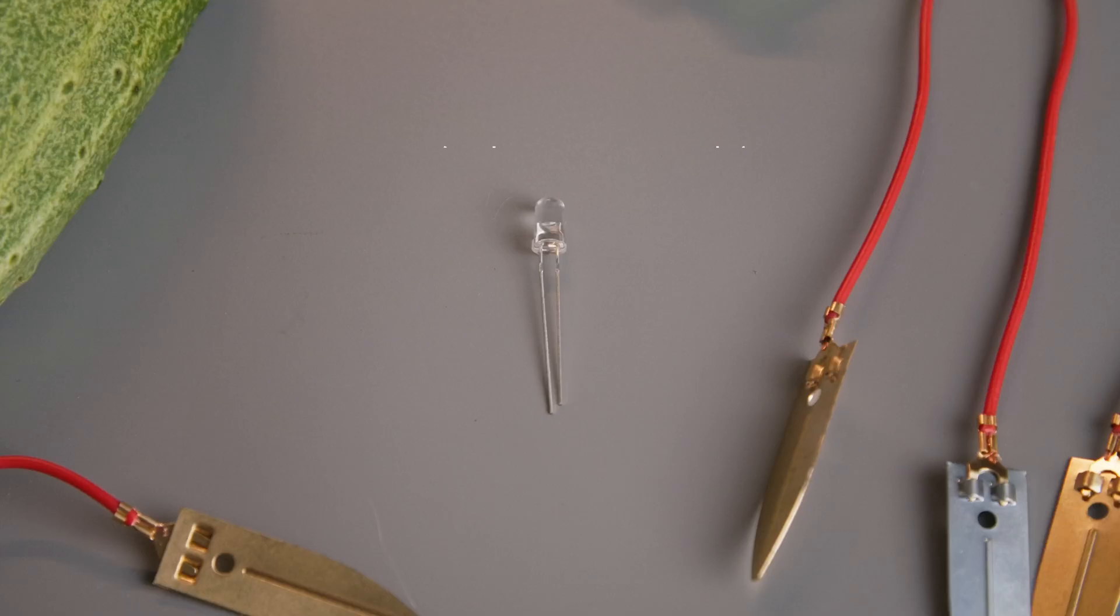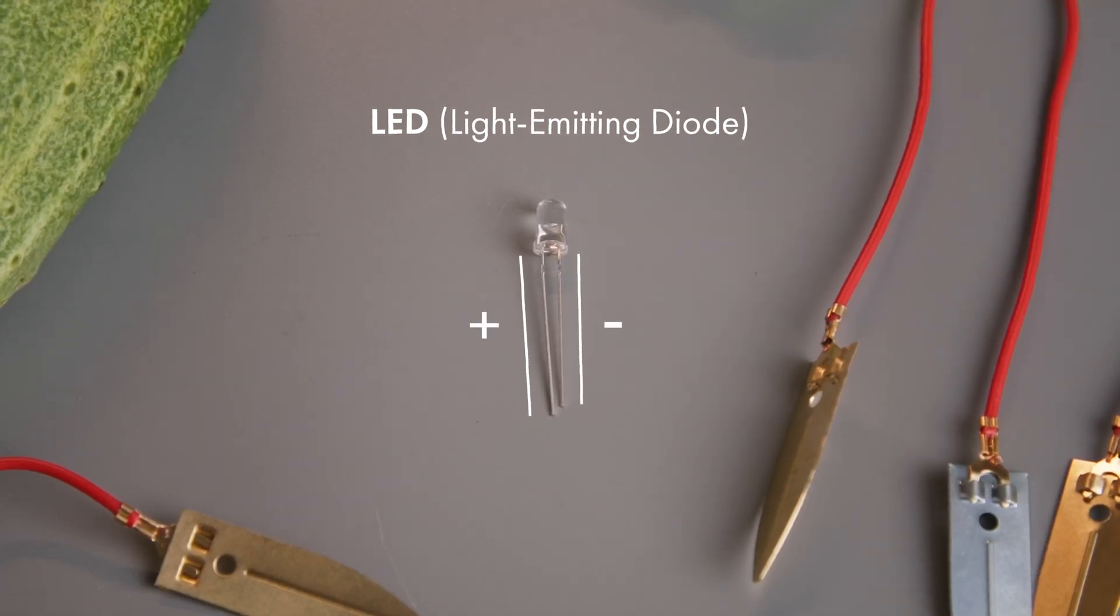For you to know about this LED, the length of the legs explains which one is positive and which one is negative. The long leg is positive and the short leg is negative.